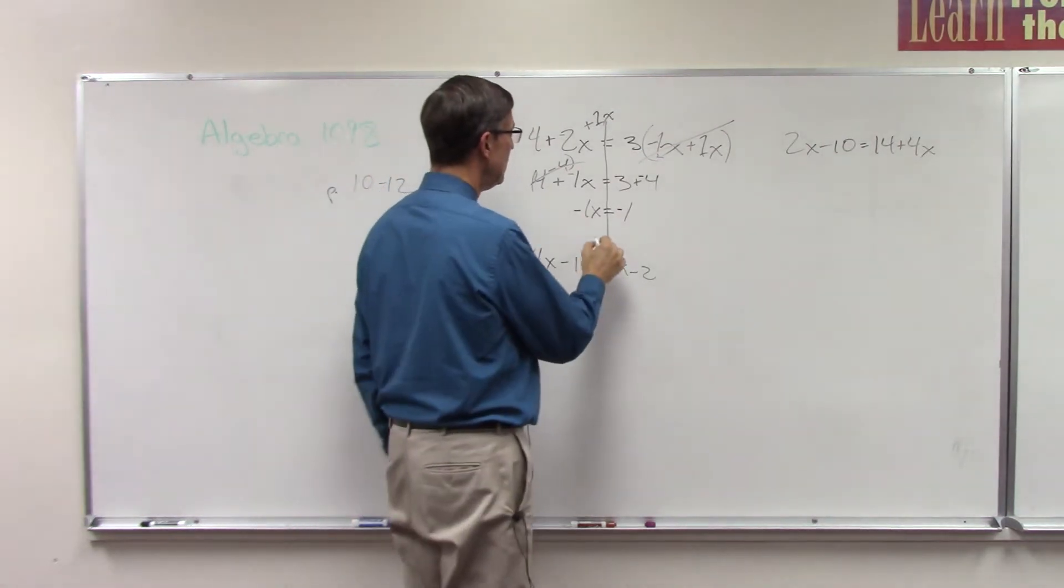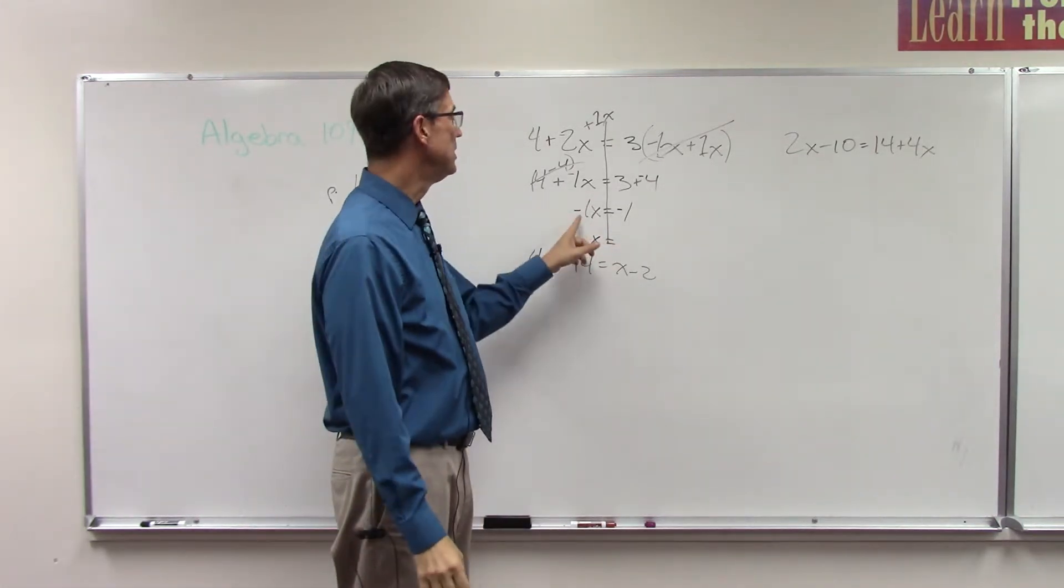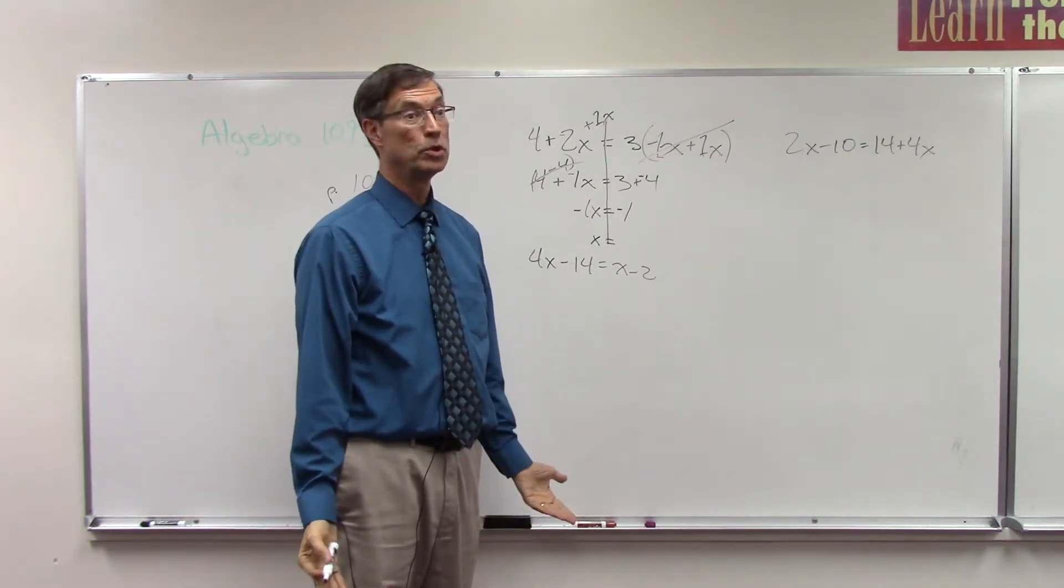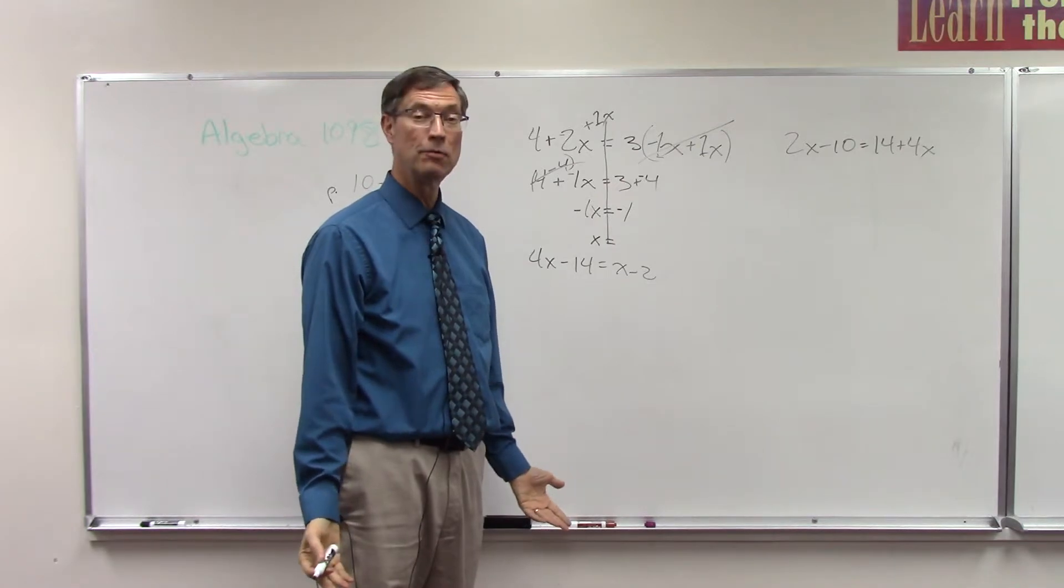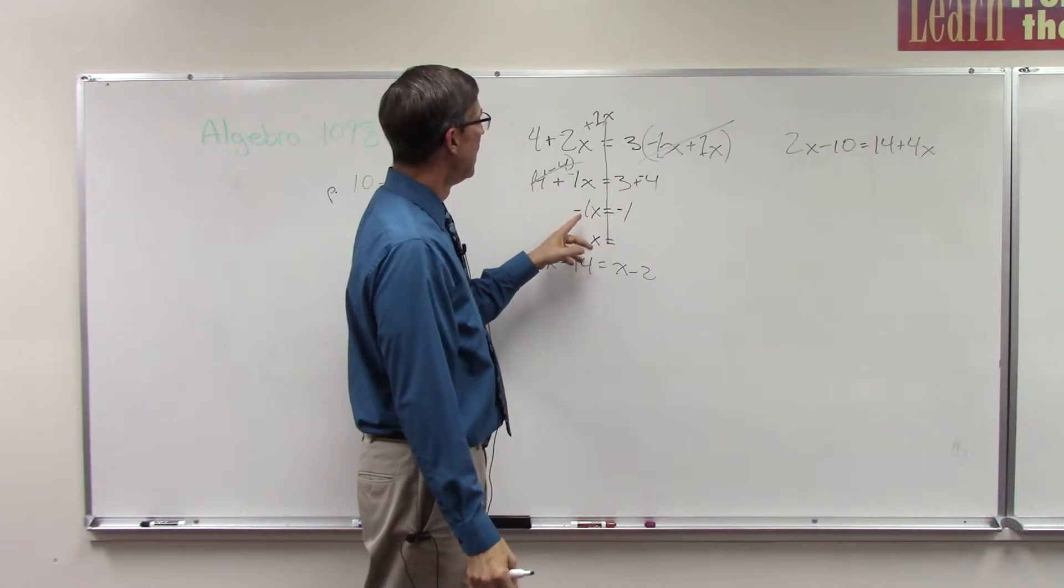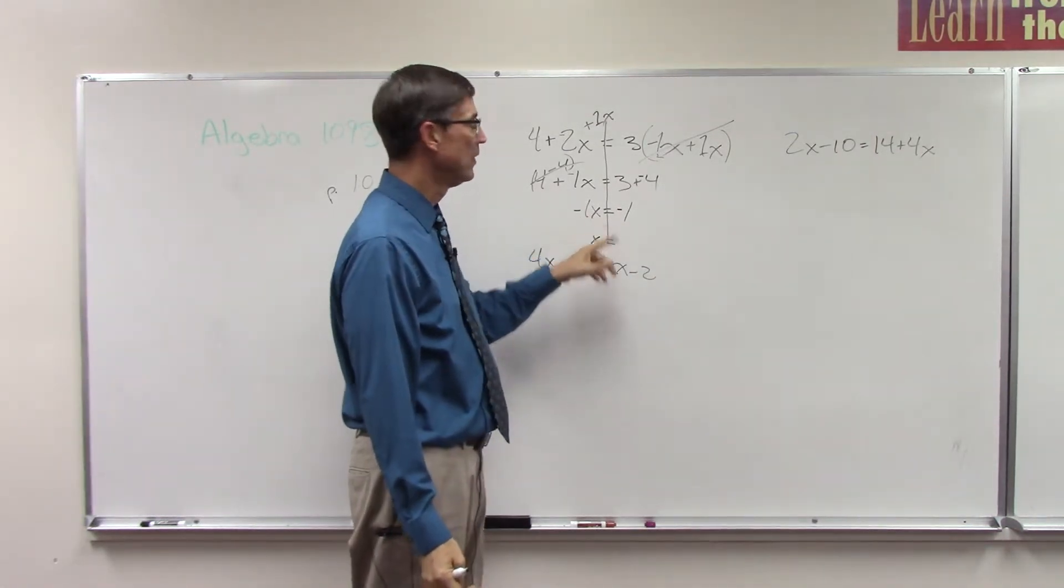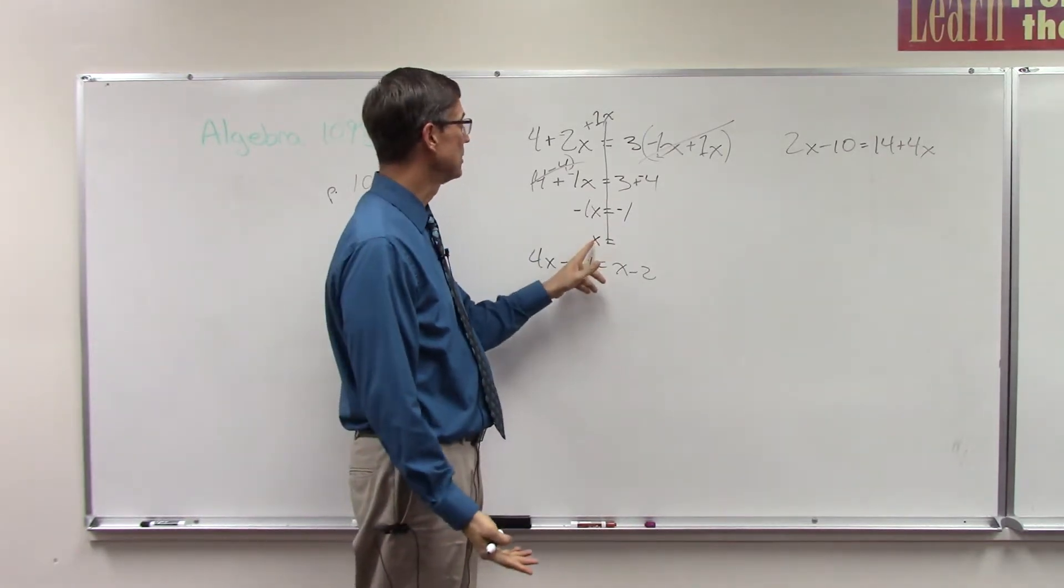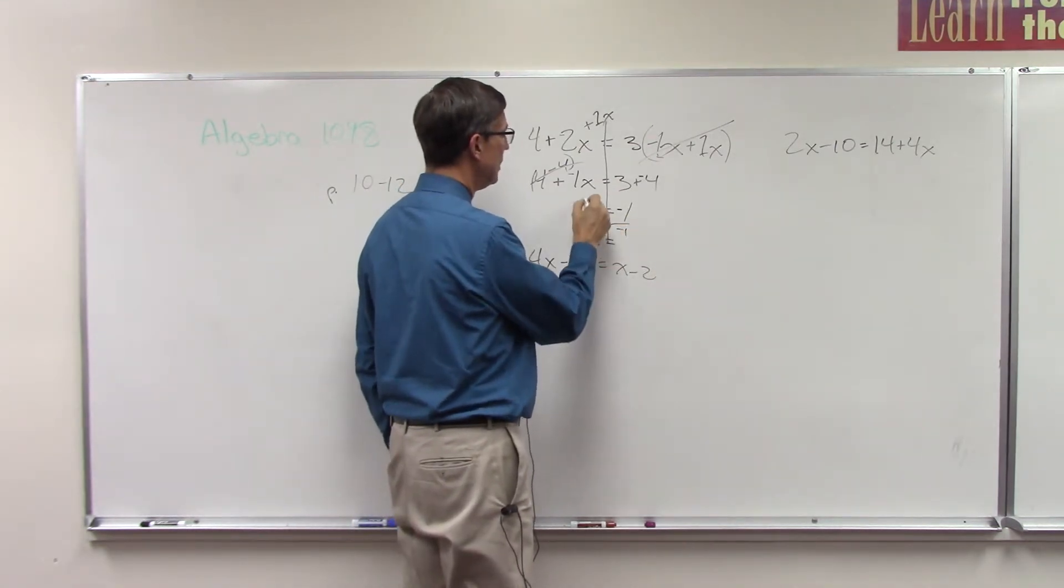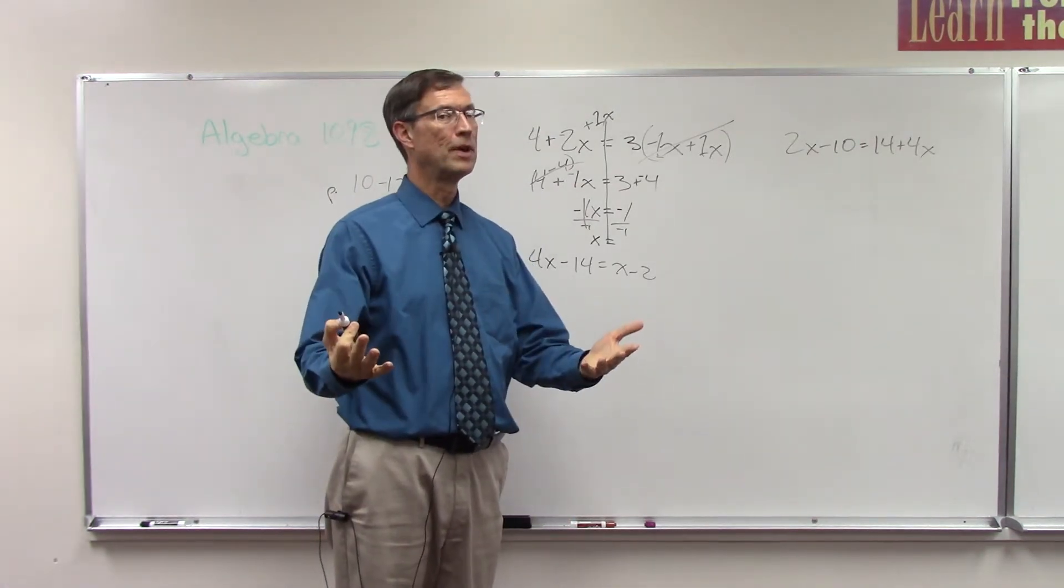our final answer always has to be just X, not negative 1X. So how do we get rid of the negative coefficient in front of that? Real simple: you can either multiply by negative 1 or divide by negative 1 on both sides. Generally, the rule all the way through algebra is whatever the coefficient is in front of X, you divide by that to get X by itself. So if I divided by negative 1, that would cancel, and negative 1 divided by negative 1—any number divided by itself is 1.